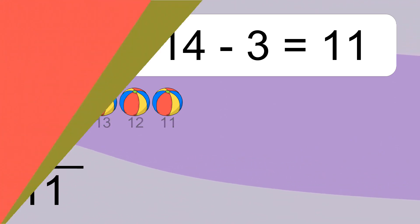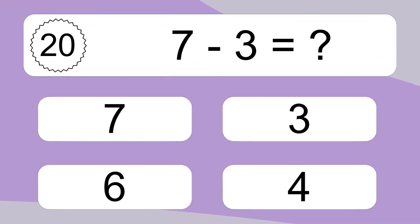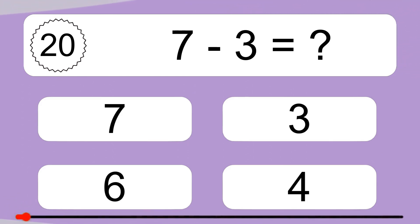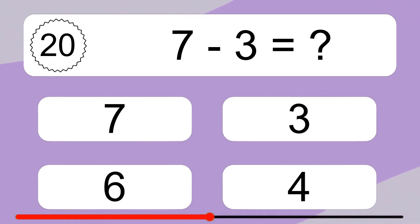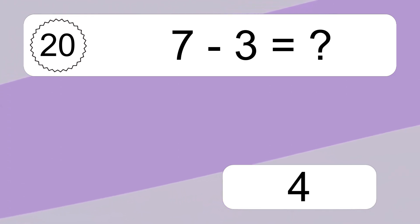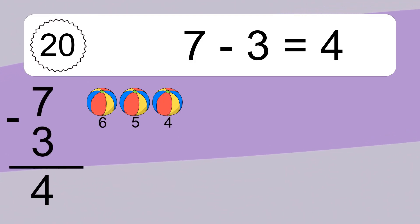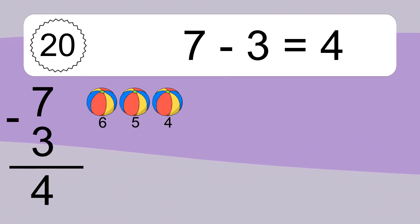7 minus 3 equals what? 7 minus 3 equals 4. Let's count it.